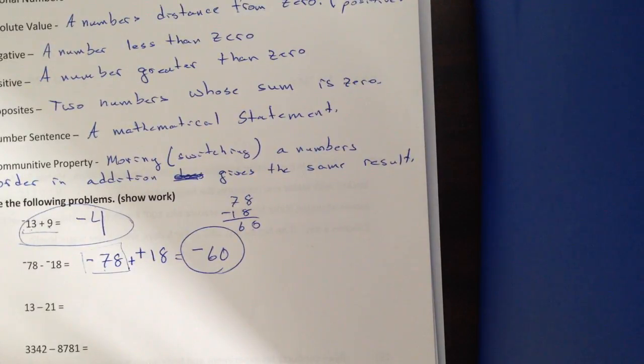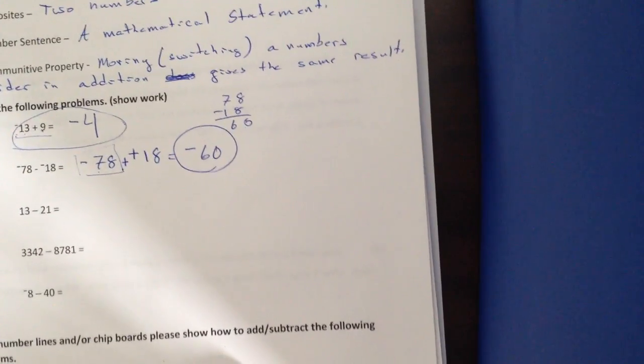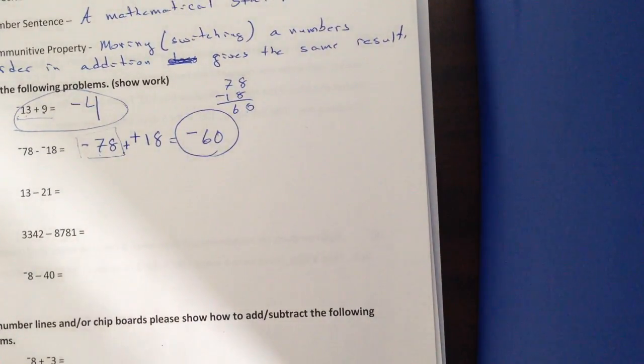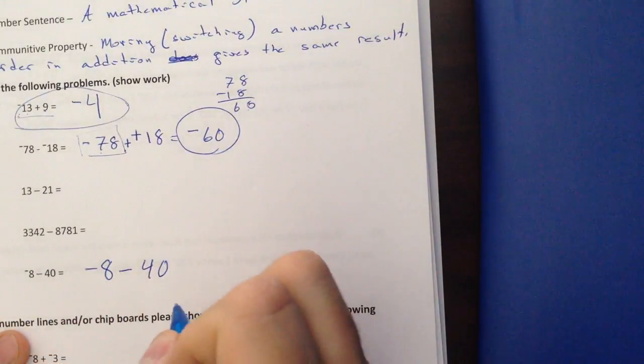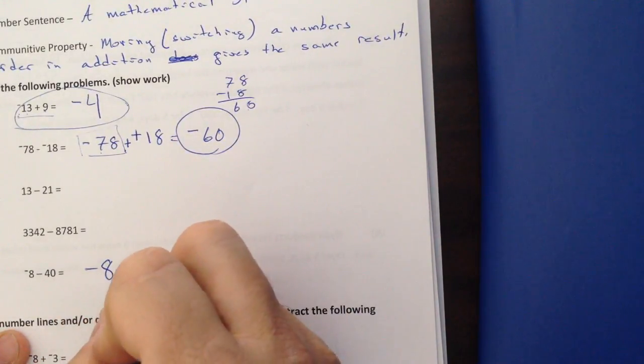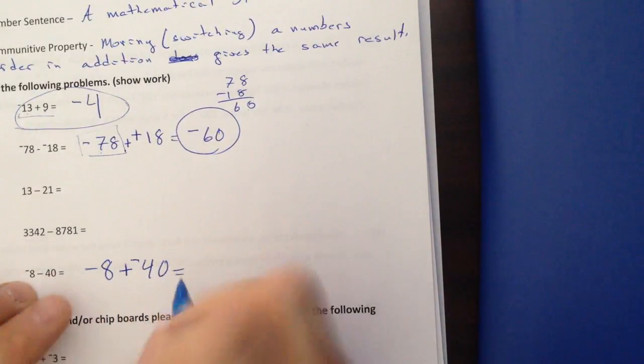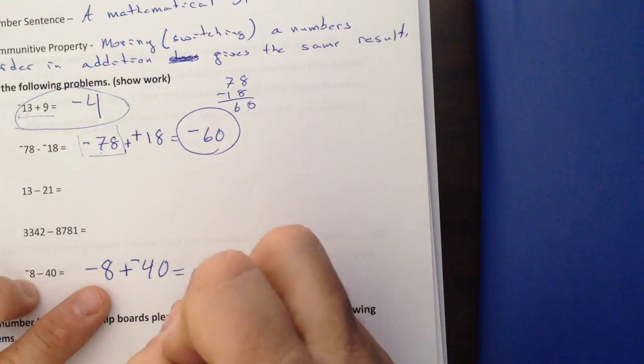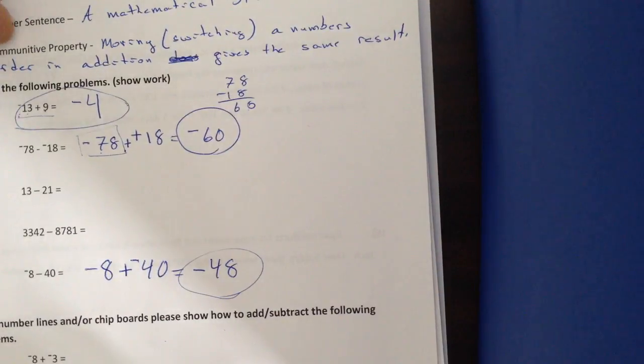And the second rule for adding integers, if the signs are the same. Let's take a look at problem number 13 here. When I change to addition, I have negative 8 minus 40. When I change to addition, negative 8 plus negative 40. If the signs are the same, add the numbers, 48, keep the sign, negative. Showing your work, please.